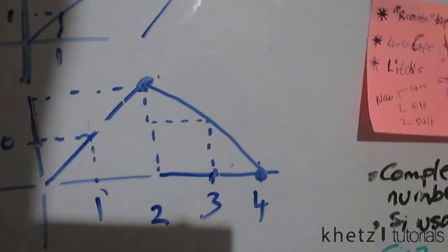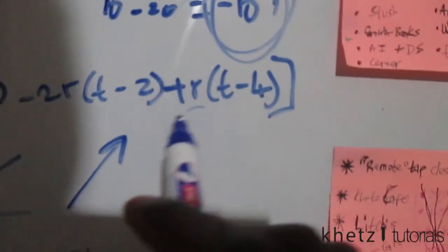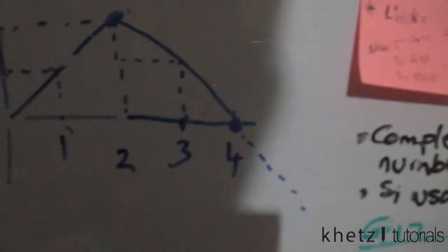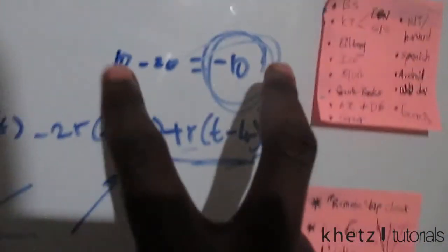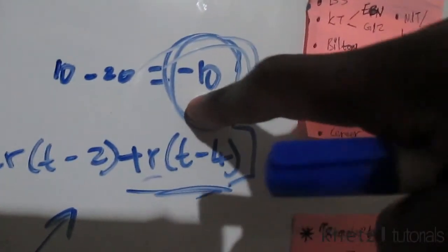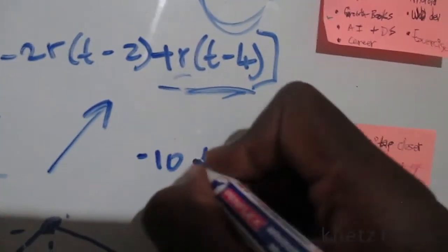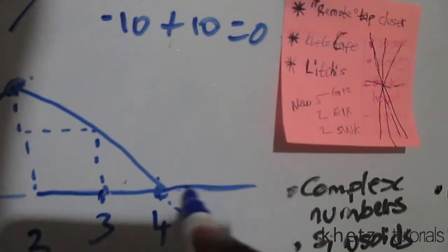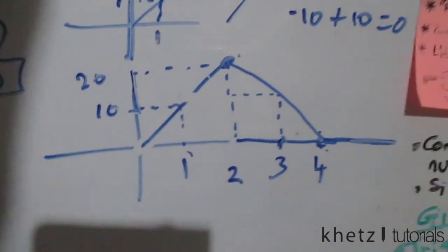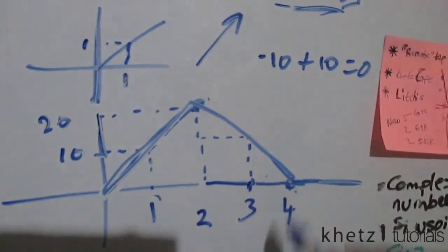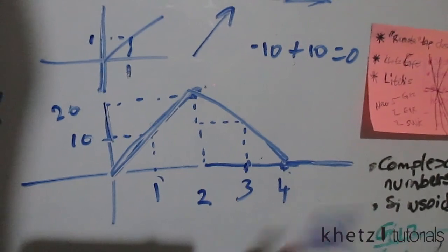At t=4 we have another disturbance of +10. We had a net slope of -10 and now add +10: -10 + 10 = 0. This means after t=4 we just have a constant line — slope of 0. Therefore the final diagram is a triangle shape, rising with slope 10, falling with slope -10, then flat at zero, and that is how you get this diagram.